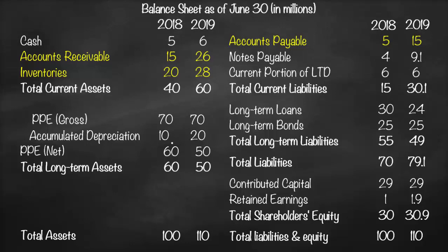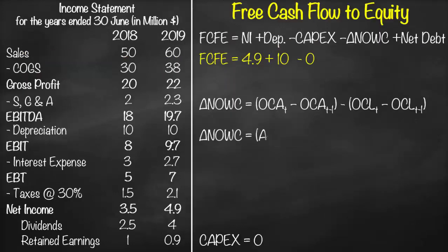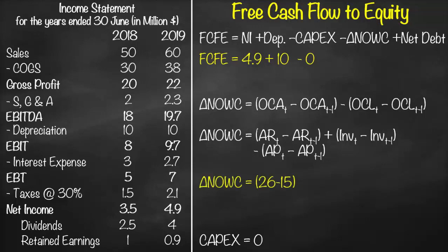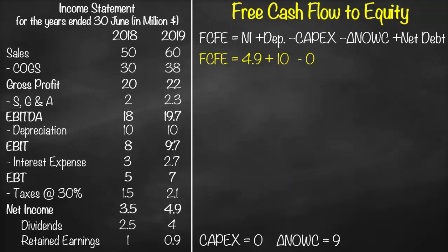In this example, accounts receivable and inventories are operating current assets; accounts payable is an operating current liability. So the change in net operating working capital equals: accounts receivable (26 minus 15) plus inventory (28 minus 20) minus accounts payable (15 minus 5). This gives a change in net operating working capital of 9, so in our formula we subtract 9.